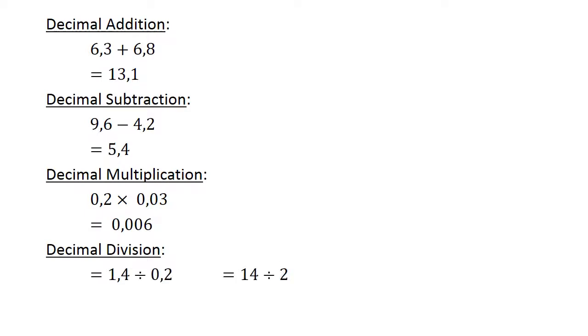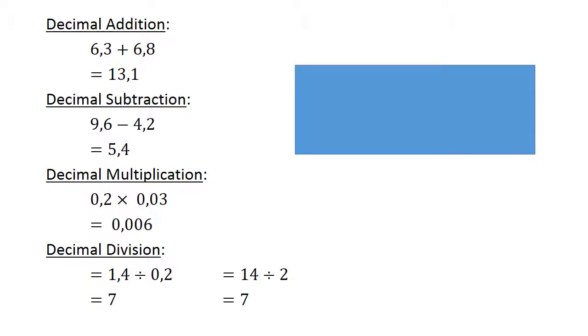Decimal division: 1.4 divided by 0.2 equals 7. You multiply both with 10 to get whole numbers and it's 14 divided by 2 equals 7.